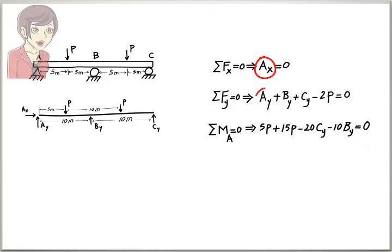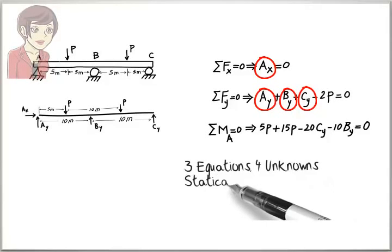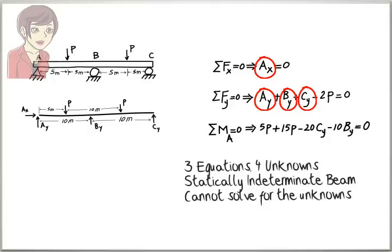Notice that we have four unknowns, but only three equations. Therefore, we cannot solve for the unknowns. The beam is not statically determinate. We will discuss techniques for analyzing statically indeterminate beams later in the course.